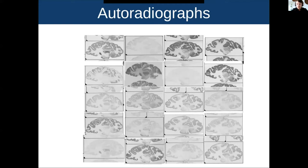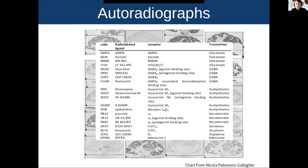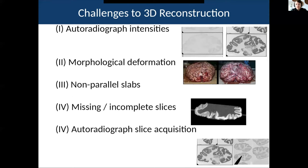The data looks like this for those who haven't seen it before. It covers several different neurotransmitter receptor families, including glutamate, GABA, acetylcholine, noradrenaline, serotonin, and dopamine.